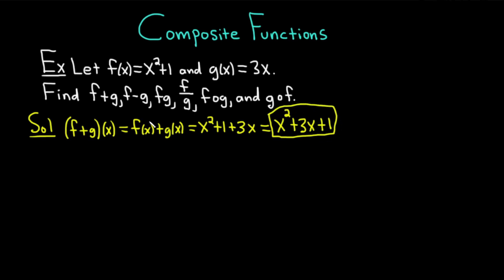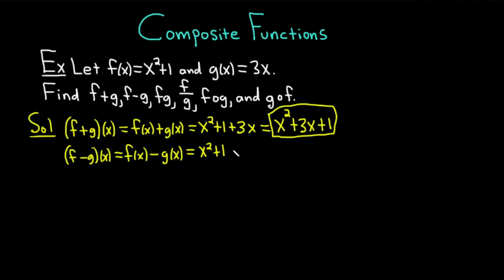Let's do (f−g)(x). This is equal to f of x minus g of x. F of x in this case is x squared plus 1, and then g of x is just 3x, so minus 3x. This ends up being x squared minus 3x plus 1.